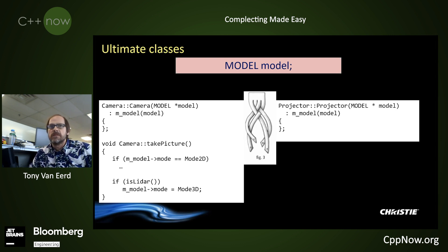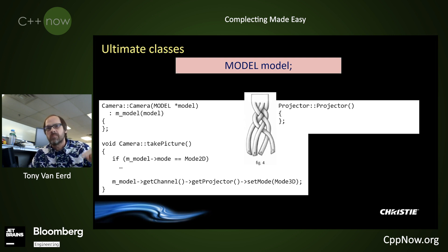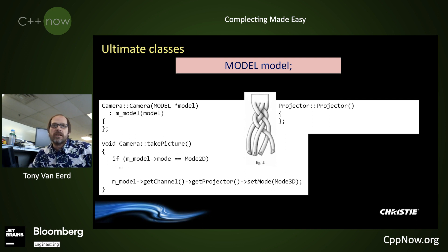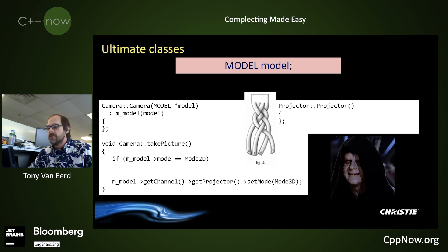If both classes have access to 'model,' you can access whatever you need because model holds everything. Even better: if the projector class is isolated and doesn't have a pointer to model, but camera does — camera can just dig through model, calling get-channel, get-projector, get-get-get all the way down until it has access to projector and can change it. If you have access to model, you have ultimate power. Complecting is easy — the model pointer is close at hand.